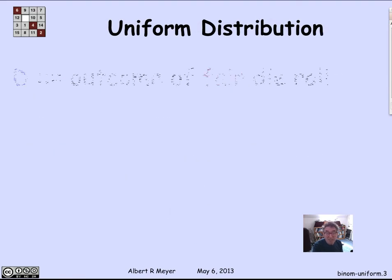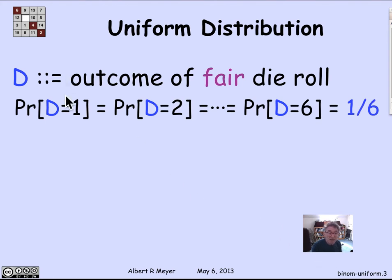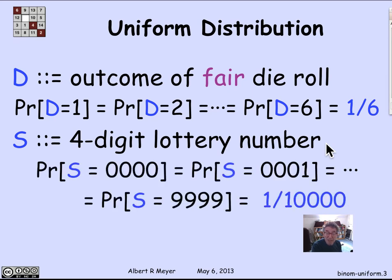Other examples that come up: if d is the outcome of a fair die — dice are six-sided — the probability that it comes up 1, 2, or 6 is 1/6 each. Another example is the four-digit lottery number, where the four digits are each chosen at random, so possibilities range from 0000 through 9999 for 10,000 numbers, all equally likely. So the probability of any outcome is 1/10,000 — another uniform random variable.